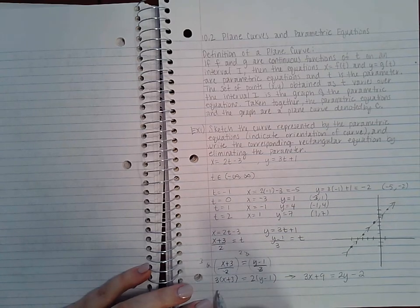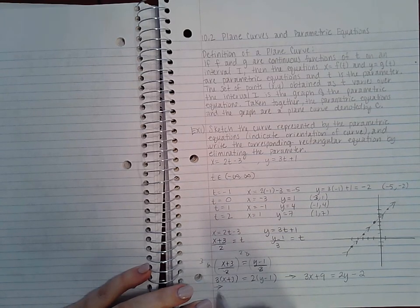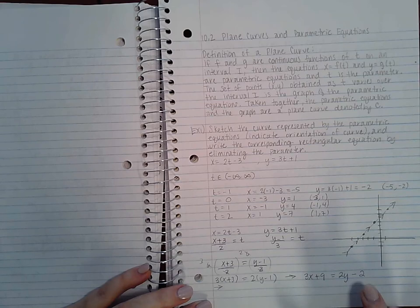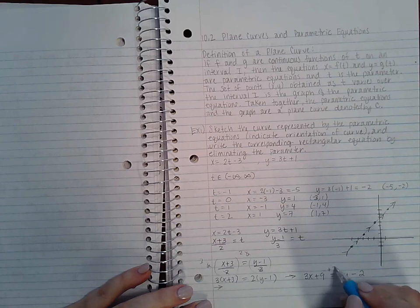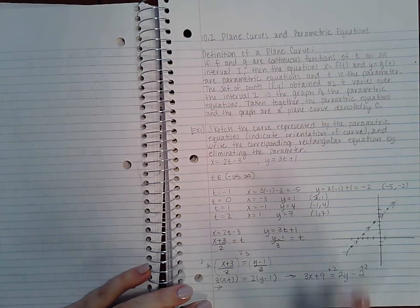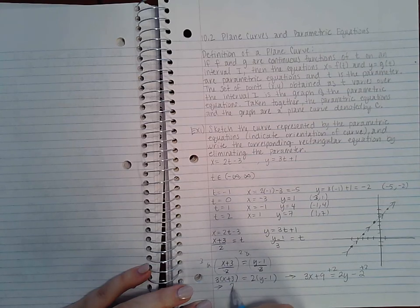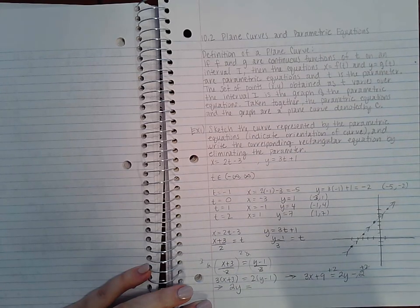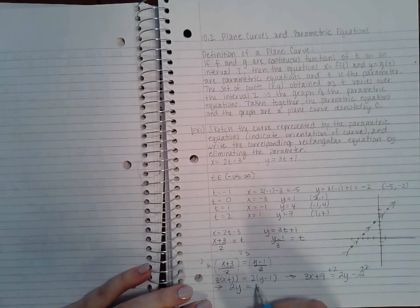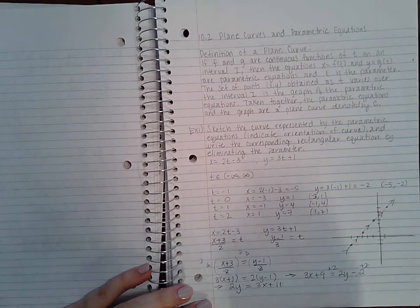like to have it in slope-intercept form. So I'm going to first add 2 to both sides, then switch the sides of the equation. So 2y is going to go on this side and the 2s are gone here, and then 3x + 11 is now on the right-hand side. And if I divide both sides by 2, I get y = (3/2)x + 11/2.